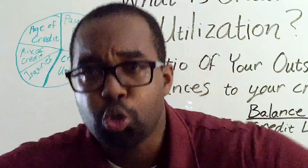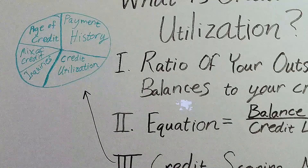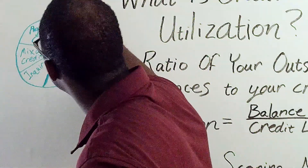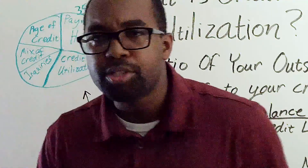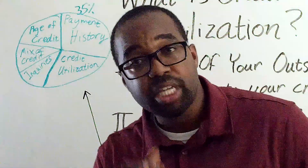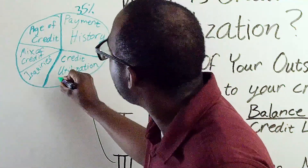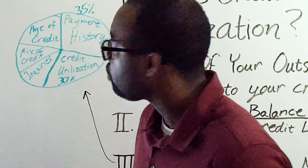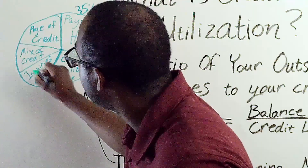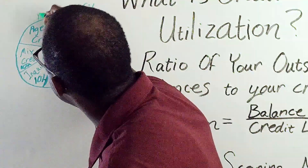Do you have installment loans? Do you have credit cards? It's good to have a mix of credit accounts. What is the percentage breakdown? Payment history is 35% of your score. Think of it like weighted exam sections — same concept. Credit utilization is 30% of your score. Inquiries and mix of credit accounts are 10% each. The age of credit is 15%.